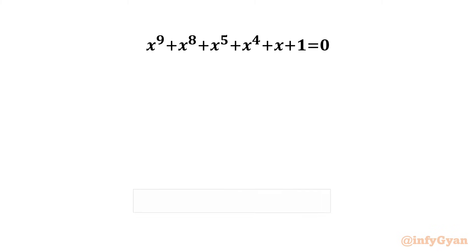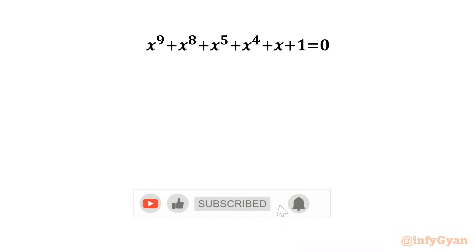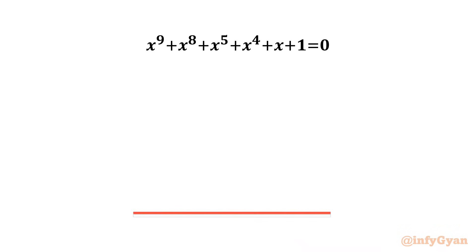Welcome to Infigyan friends. Today in this video we are going to take up one very interesting question from algebra. Here we have to solve a degree 9 equation: x power 9 plus x power 8 plus x power 5 plus x power 4 plus x plus 1 equal to 0. We are going to calculate 9 possible solutions, real or complex.